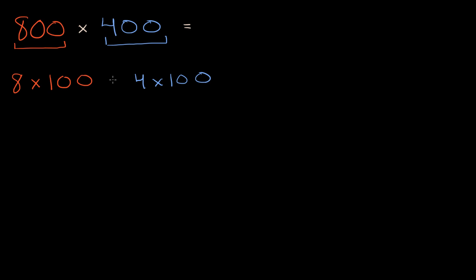So it's 8 times 100 times 4 times 100. If you're multiplying a bunch of numbers like this, you can switch the order in which you're doing the multiplication. So you can view this as 8 times 4 times 100 times 100. Now why is this easier? Well, 8 times 4, if we know our times tables, is 32.